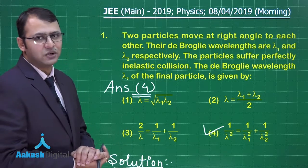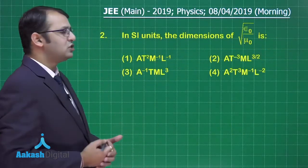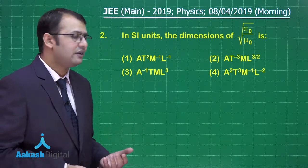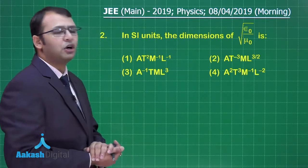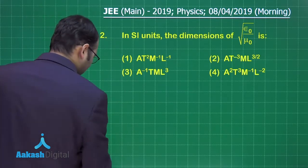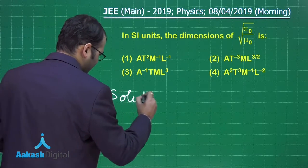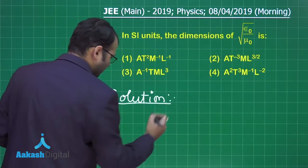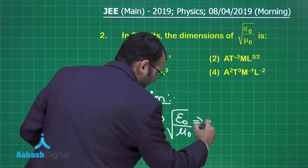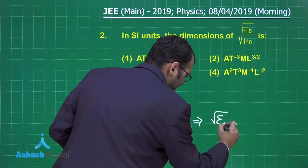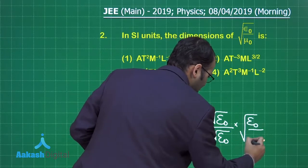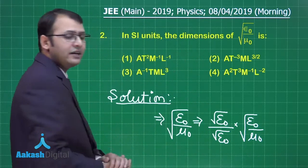Let's move ahead with our second question. It's a very easy question, belongs to units and dimension section mechanics. Here, the dimension of square root of epsilon 0 by mu 0 is asked. Let's start with the solution. With epsilon 0 divided by mu 0, what I can do is multiply it with epsilon 0 up and down, both numerator and denominator.